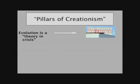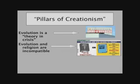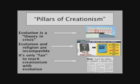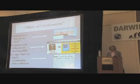The second pillar of creationism is that evolution and religion are incompatible — that's something exercised with great enthusiasm. And the third is the fairness argument: that it's only fair if you teach evolution that you balance it with something — creationism, creation science, intelligent design, or evidence against evolution. You're seeing a pattern here, right?